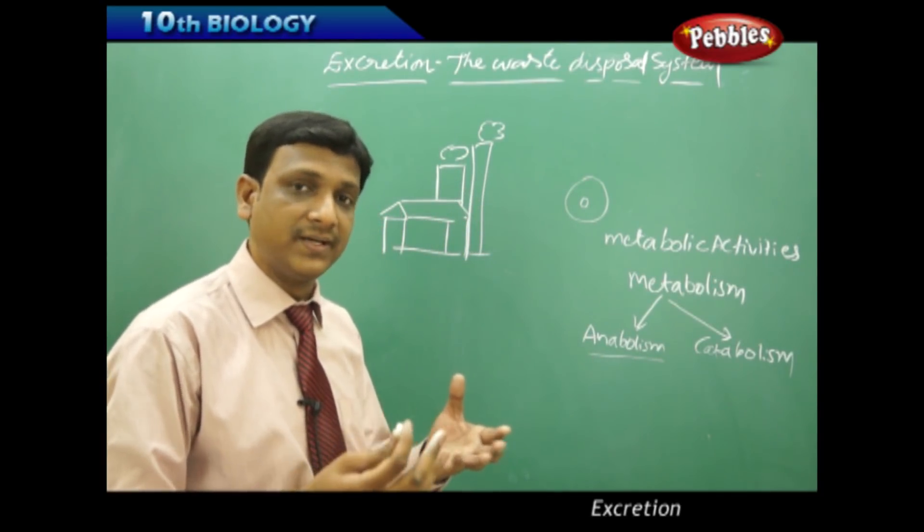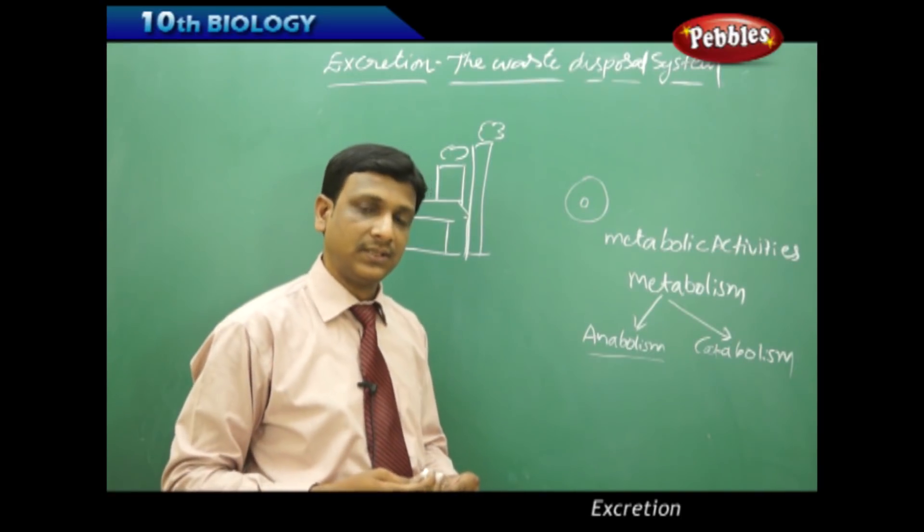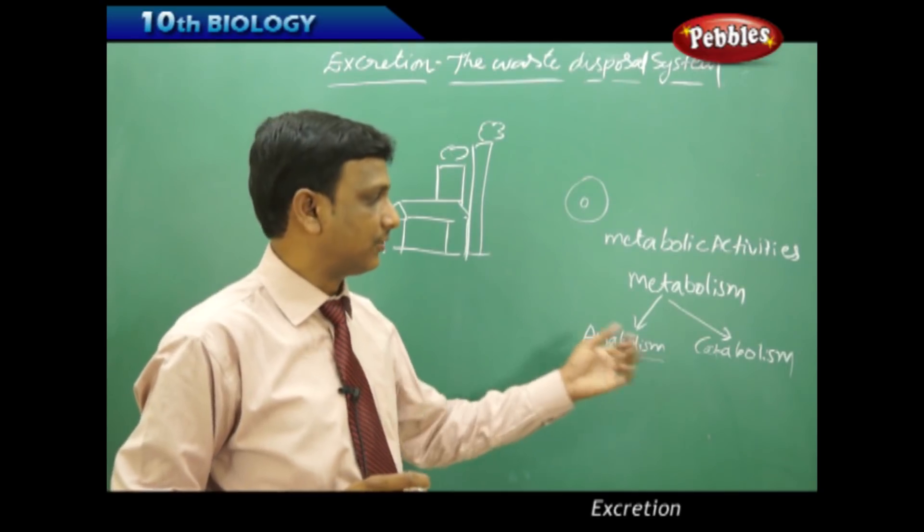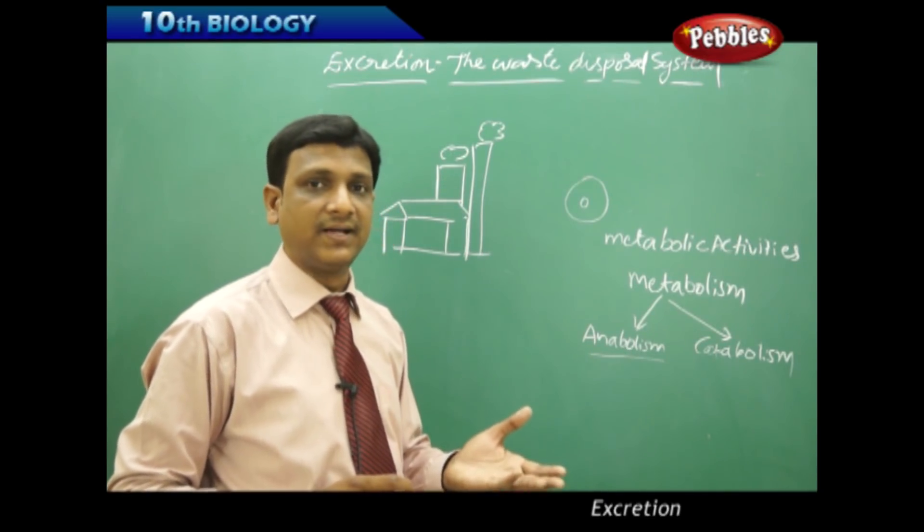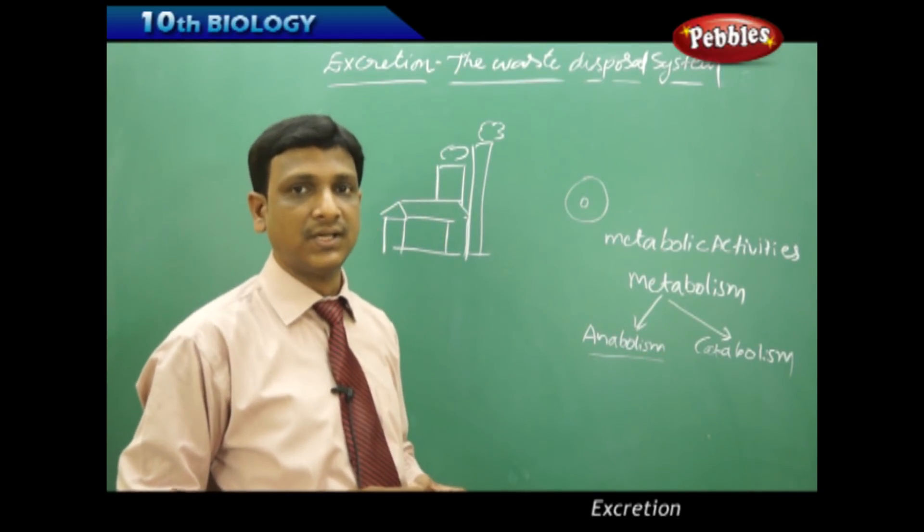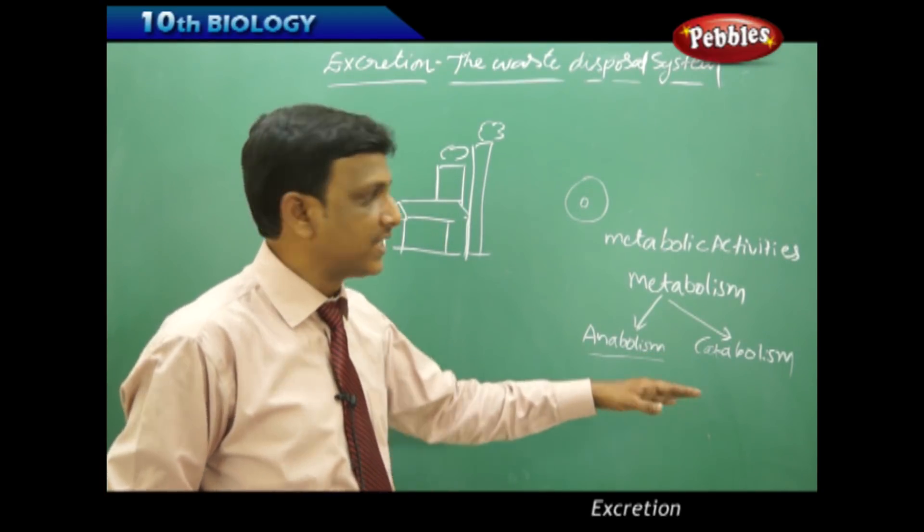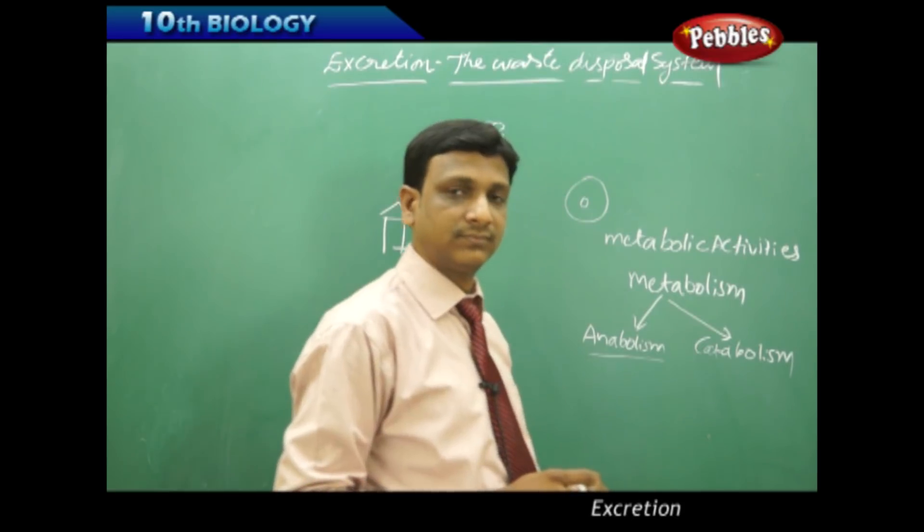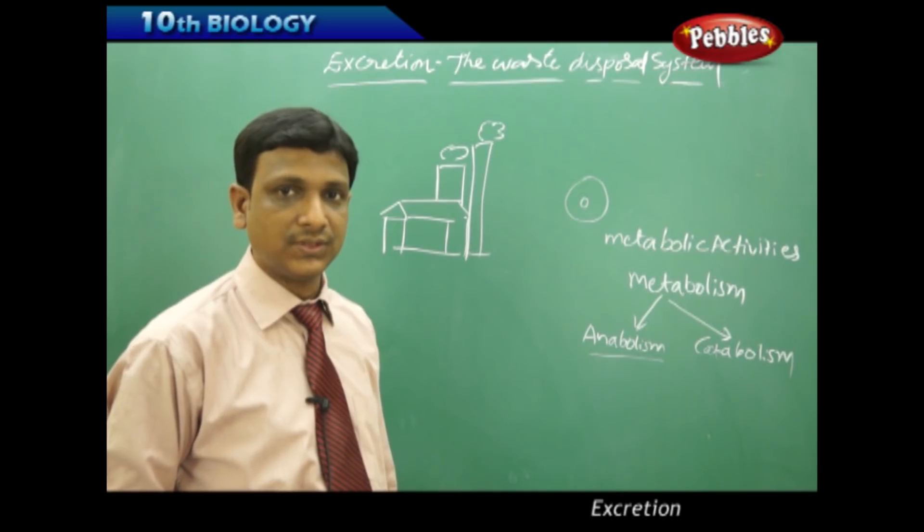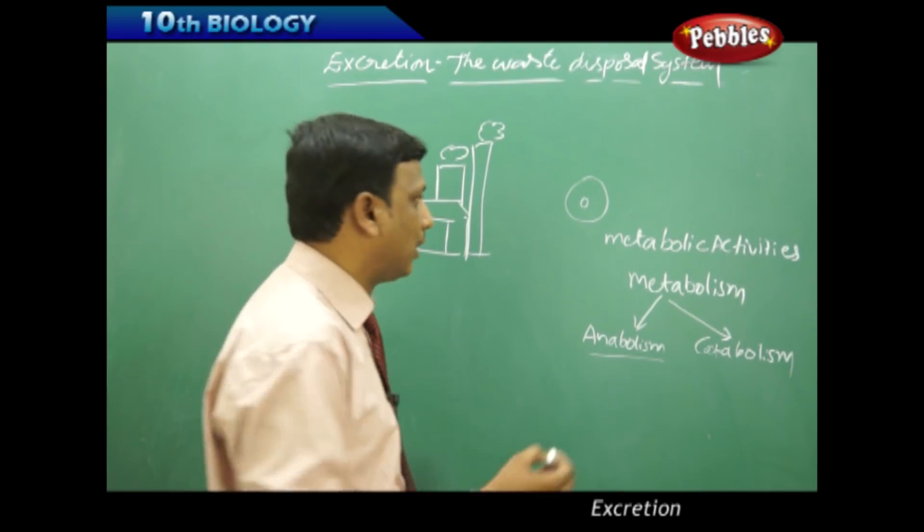If any big molecule is synthesized or prepared, you call it as anabolism. What is catabolism? If any big molecule is broken down to simple parts, it is catabolism. Both types of activities take place inside a cell. Anabolism takes place, catabolism takes place. These two together called as metabolism.